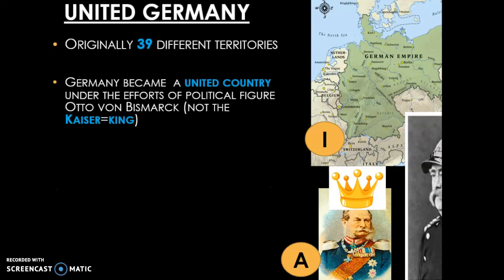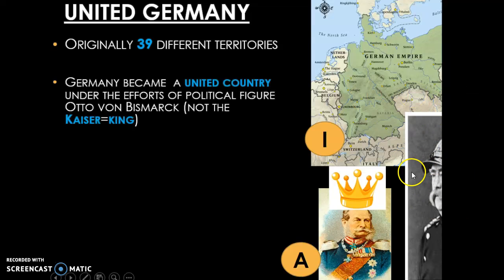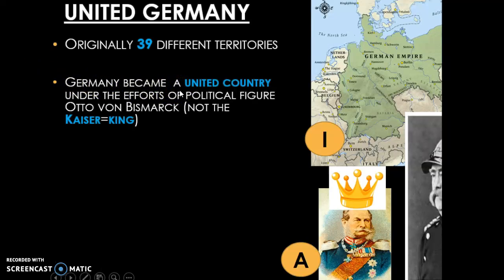This all changed when a guy by the name of Otto von Bismarck came into the scene. Basically, Germany became a united country under the efforts of political figure — meaning politician or government worker — Otto von Bismarck.